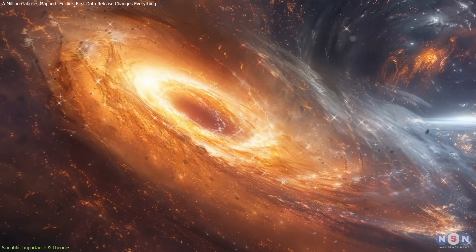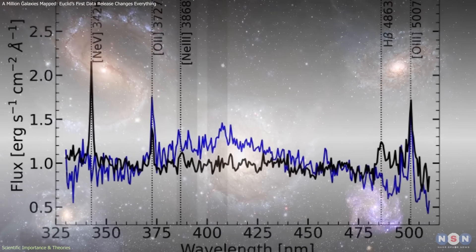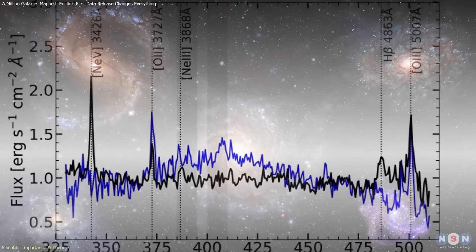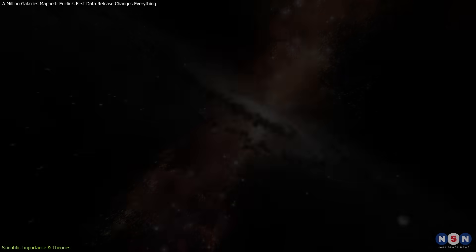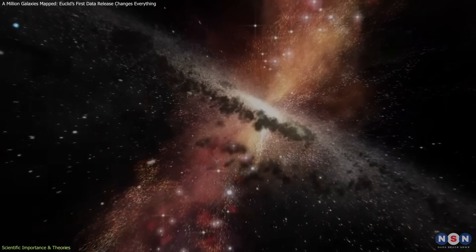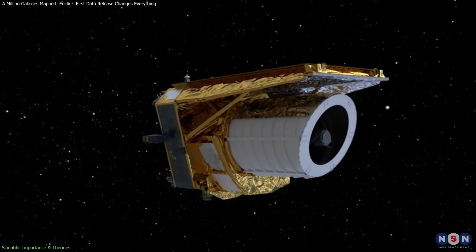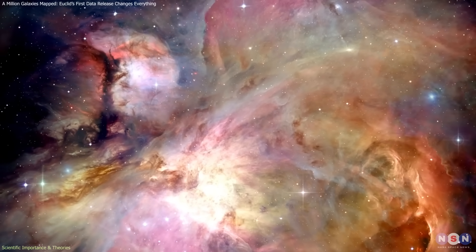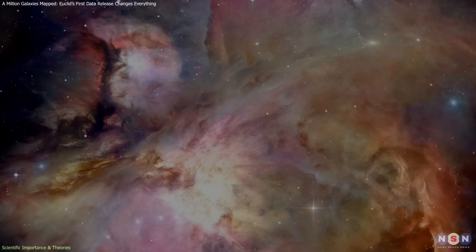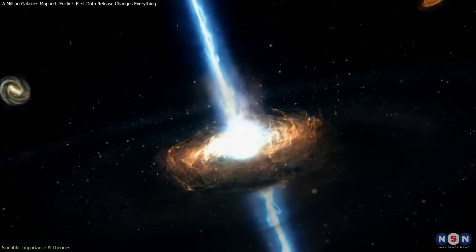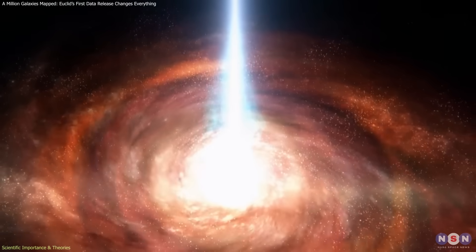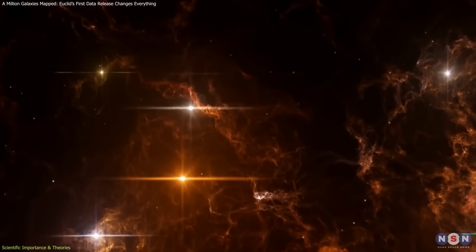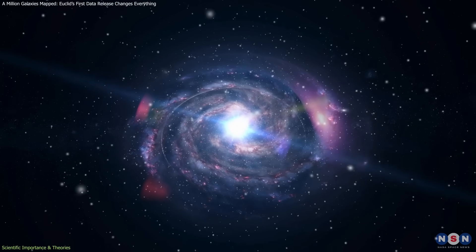The highly ionized galaxies contribute to deeper questions about feedback mechanisms. Feedback describes how energy released by stars or black holes heats or expels gas, potentially stopping new stars from forming. If Euclid's early data is representative, environments shaped by intense feedback may be more common than previously documented. Understanding how these energetic conditions scale with galaxy mass, environment, and cosmic time helps refine models of star formation quenching, one of the key transitions in galaxy evolution.